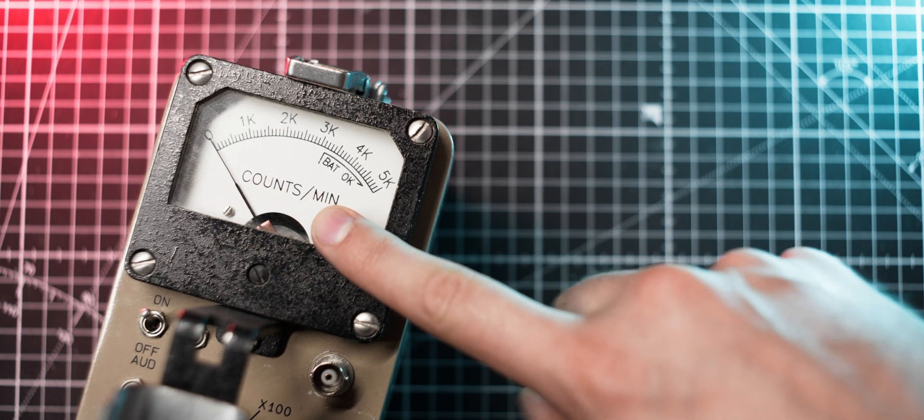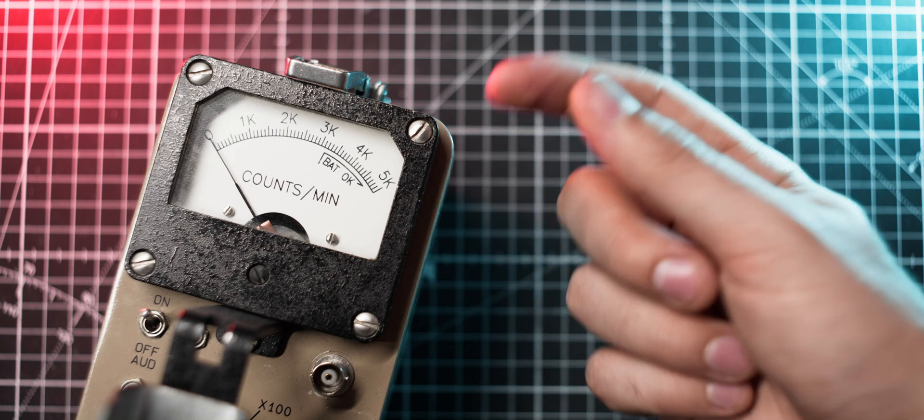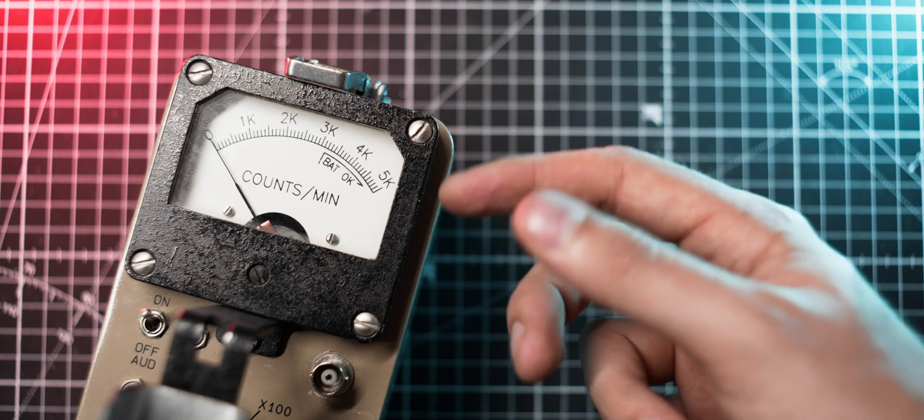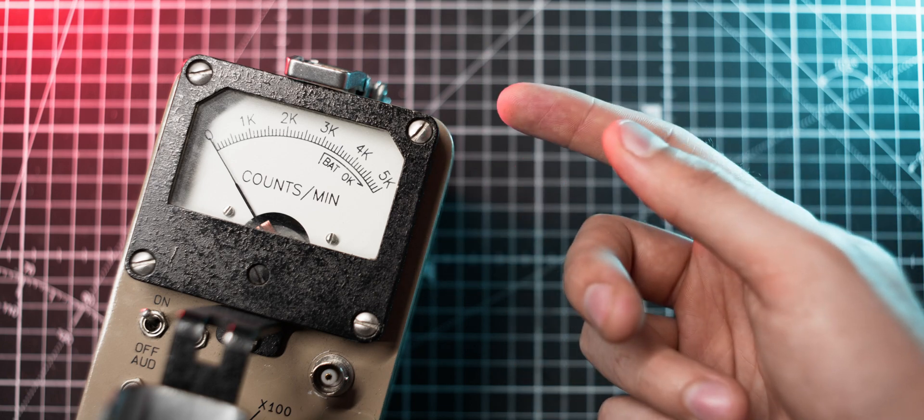You've probably heard people talk about sieverts, curies, becquerels, counts per minute, and many other types of units. But which ones should we actually use?